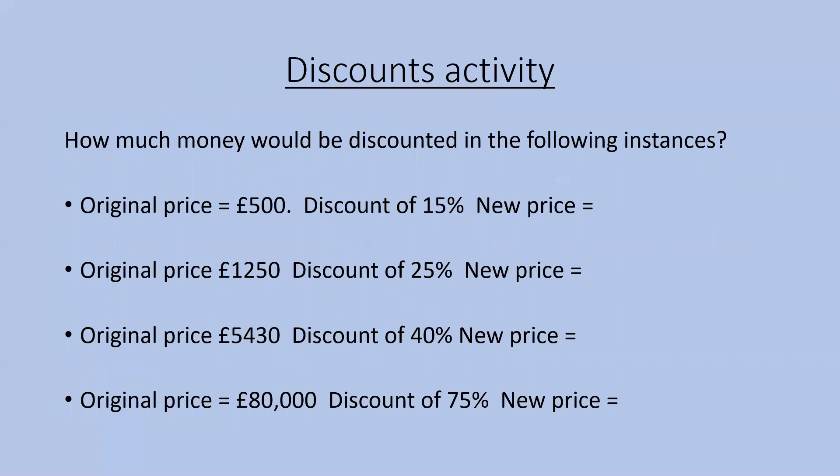Here are four questions to work through to find the new prices after discounts have been applied. Multiply the original price by the discount figure, divide your answer by 100, and take that away from the original. In the first instance, original price is £500 with a 15% discount. Second, £1,250 with 25% discount. Third, £5,430 with a 40% discount. Fourth, £80,000 with a 75% discount. There will be a 10 second lag before the next slide.